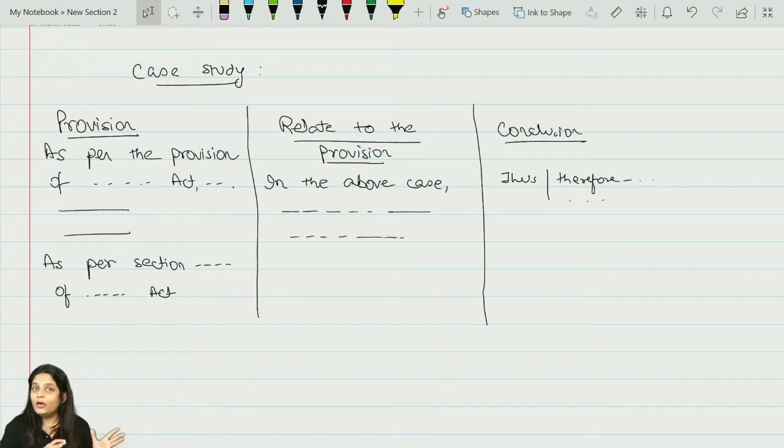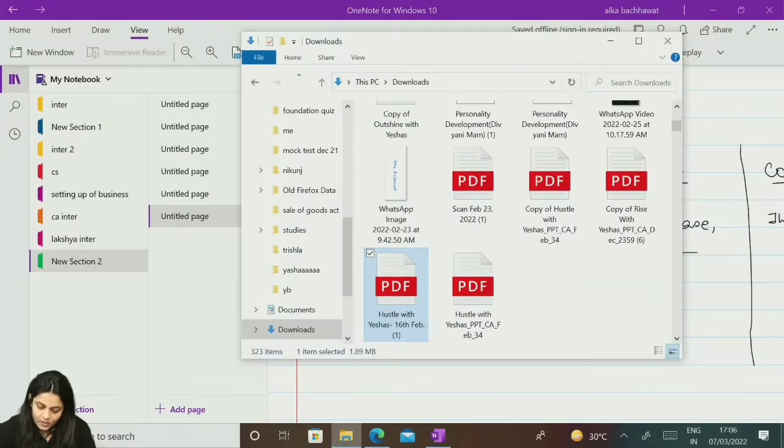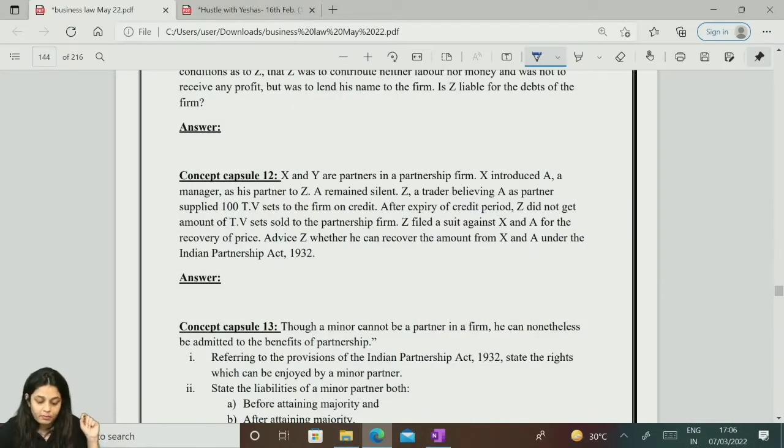Now, let us actually go into a question and try to see how it is to be written. I am going to take up a question from Partnership Act today. X and Y are partners in a firm. X introduced A, a manager, as his partner to Z. A remains silent. When you are reading the question, you need to emphasize on the keywords and that keyword will give you the provision of the answer.